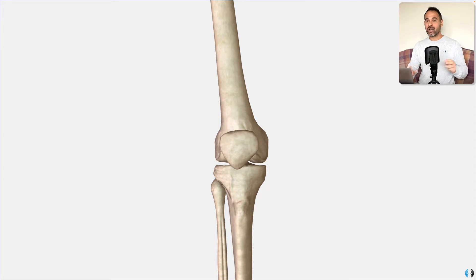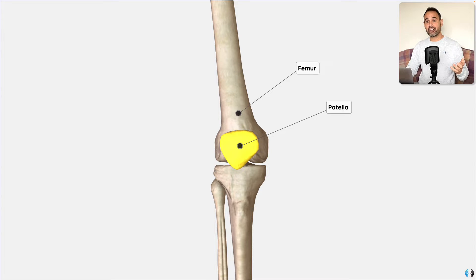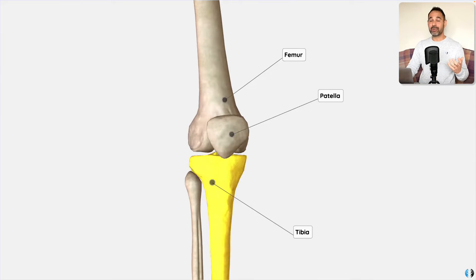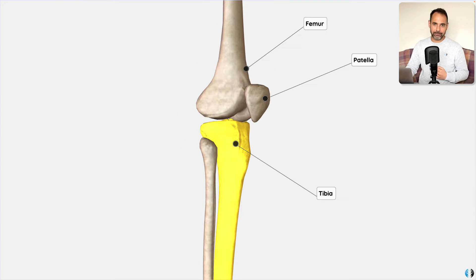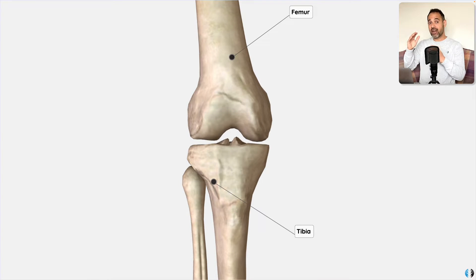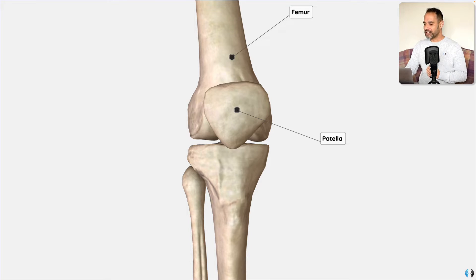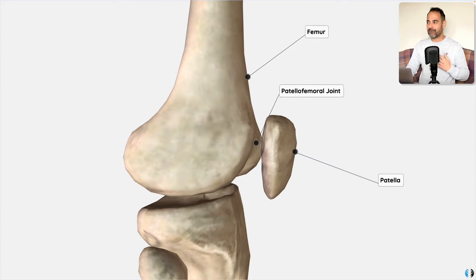Let's get our bearings with the key three components of the knee joint. We have the femur, also known as the thigh bone, the patella, also known as the kneecap, and the tibia, also known as the shin bone. The main part of the knee is where the femur articulates with the tibia, which is referred to as the tibiofemoral joint. But we also have where the patella articulates with the femur, which is the patellofemoral joint, as we're going to be diving into today.